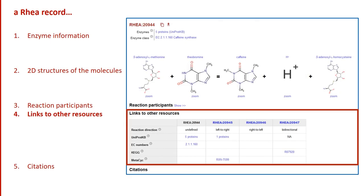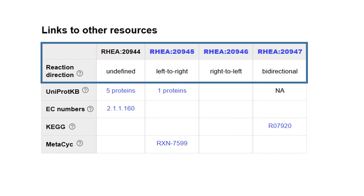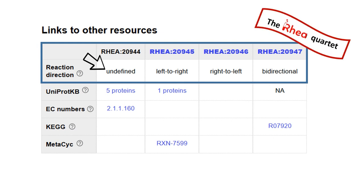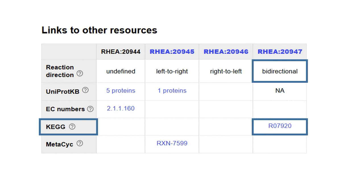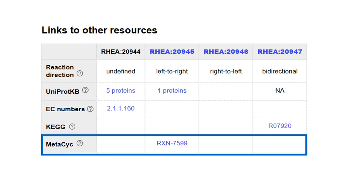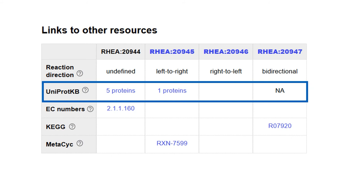Going back to our original RIA page, we look at the links to other resources. Each reaction in RIA is organized as a quartet. In addition to the reaction with undefined direction, we can also identify directed reactions: left-to-right or forward, right-to-left or backward, or bi-directional. EC numbers are always linked to reactions with undefined directions. KEGG reactions, in contrast, are always linked to bi-directional reactions, while MetaCyc may have all four types of directionality. We can also see links to UniProt KB, and in particular we see that there is one protein associated with the left-to-right reaction.